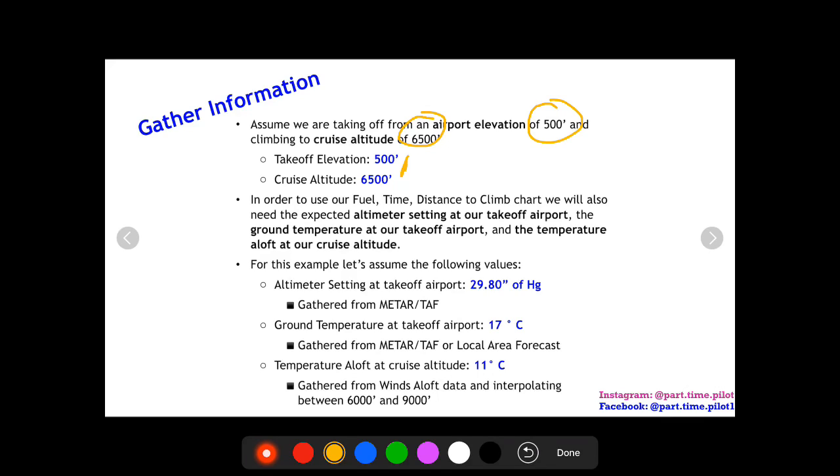Let's assume that we're taking off from an airport with an elevation of 500 feet and we're climbing to a cruise altitude of 6500 feet. So we got those two values here in blue. We're also going to need the altimeter setting at our takeoff airport, the ground temperature at our takeoff airport, and the temperature aloft at our cruise altitude.